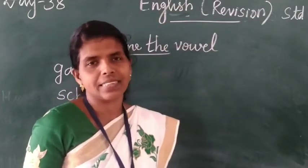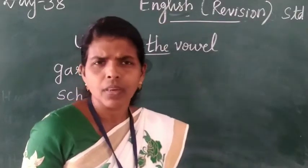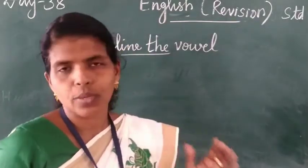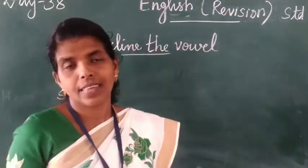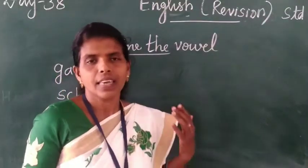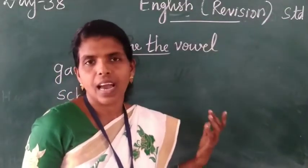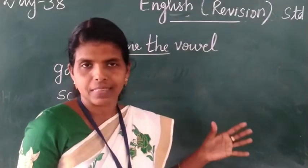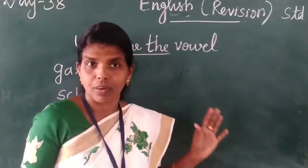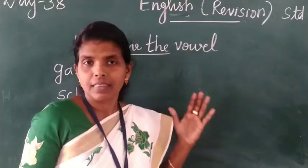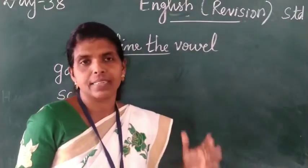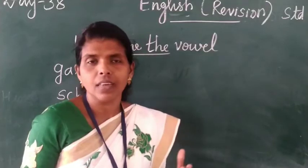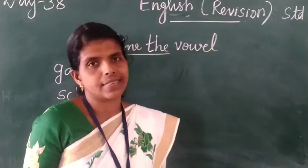The remaining letters are called consonants. It's only 5 letters: A, E, I, O, U. These 5 letters are called vowels. The remaining letters are consonants.